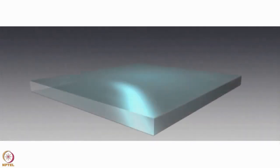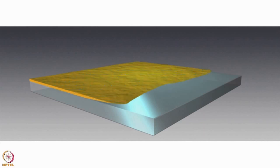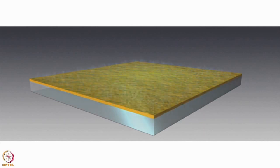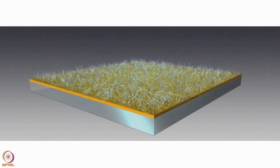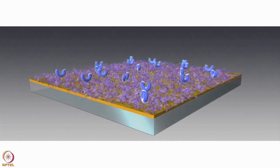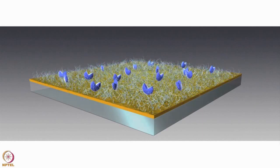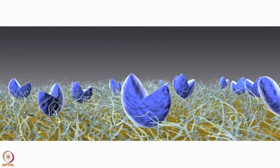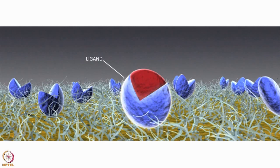A glass slide coated with a thin gold film creates the sensor surface. For most applications, a dextran matrix covering the gold film acts as a substrate to which molecules can be attached, and provides a hydrophilic environment for the interaction. Other matrices can be used to attach specific types of molecules. The specificity of the surface is determined by the nature of the molecule attached to it. One binding partner is attached to the sensor chip surface — called the ligand — and the other is injected in a continuous flow of solution — called the analyte.